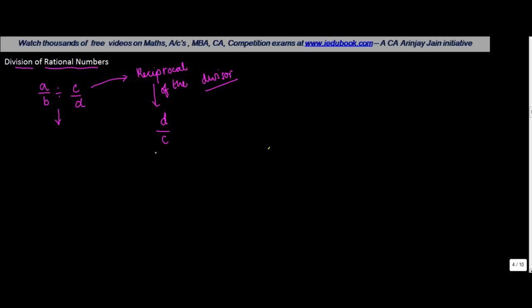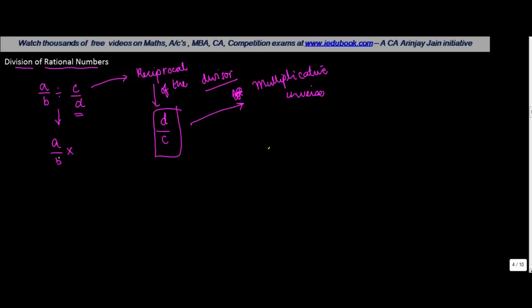This is known as the multiplicative inverse. So what you do is you find out the reciprocal or the multiplicative inverse of the divisor — in this case c upon d — and multiply it with the number which is supposed to be divided.